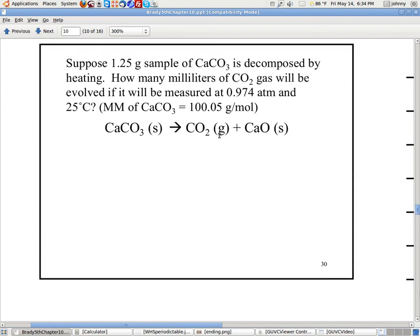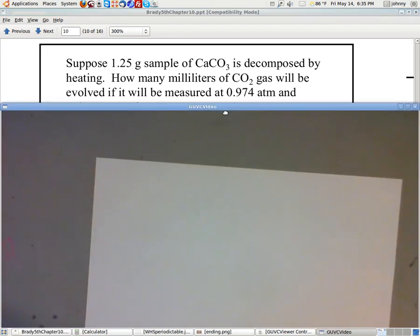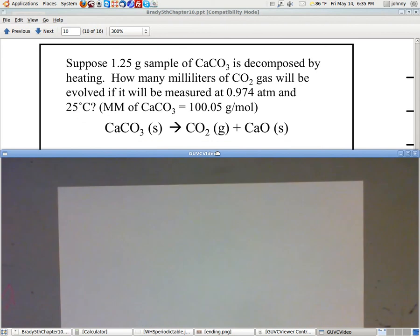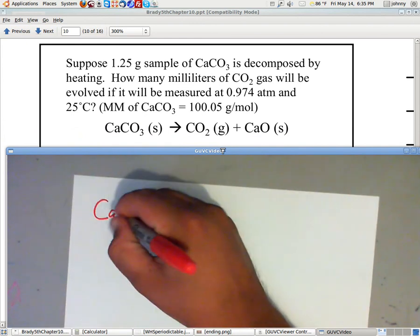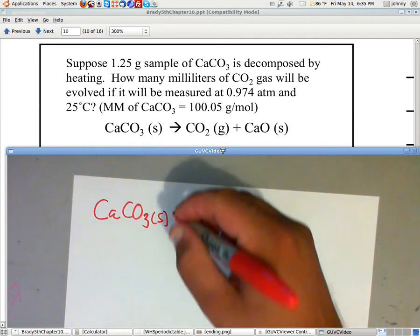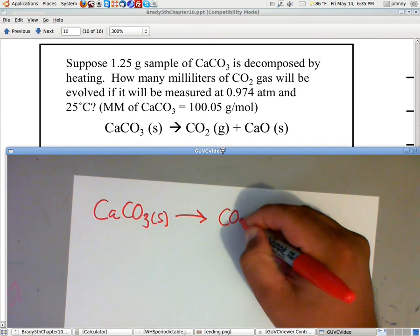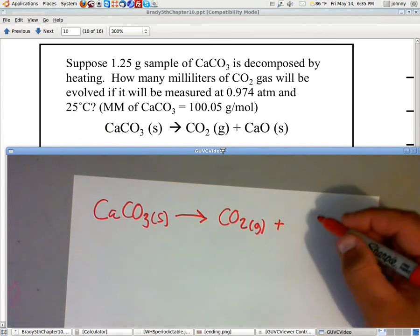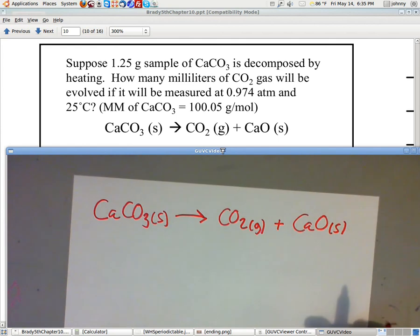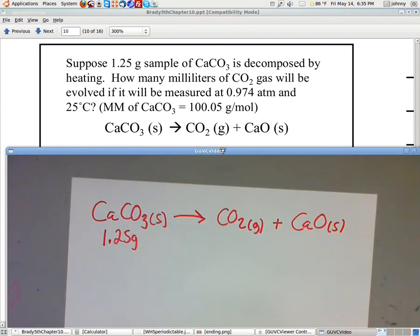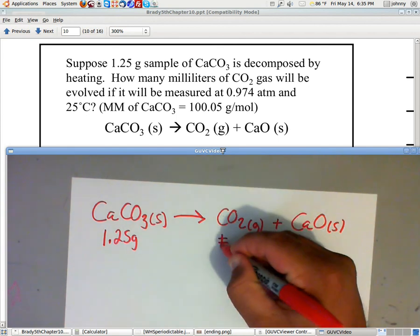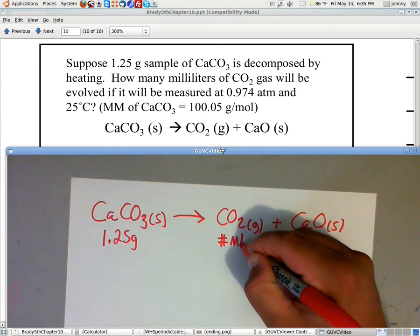Okay, here's the problem that we're going to be working today. It reads that you have a 1.25 gram sample of calcium carbonate. Now what I would recommend first doing, let me pull up the webcam so you can see this, I would write down the balanced equation first. So I would write down CaCO3, that's our solid, is being decomposed, being broke down into CO2 gas and calcium oxide, CaO, which is our solid. And they tell us that they're going to give us 1.25 grams of calcium carbonate. And they tell us they want us to find the number of milliliters of CO2.